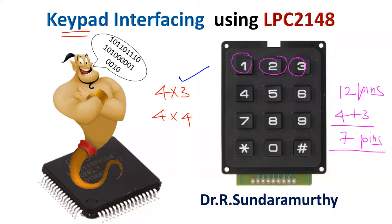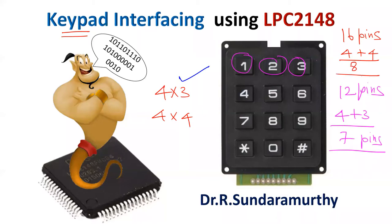You need one pin for one row and one pin for one column, so totally 4 plus 3, we need only 7 pins. Similarly, for a 4x4 matrix, you have 16 keys. Connecting them individually would require 16 pins, but in matrix format you need only 4 pins for rows and 4 for columns — 8 pins total — saving nearly 8 pins.